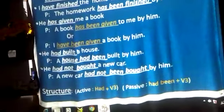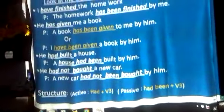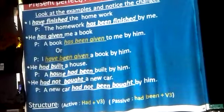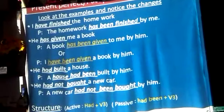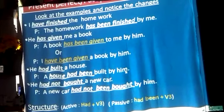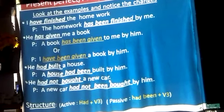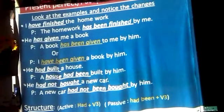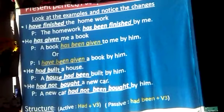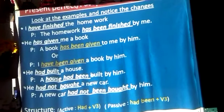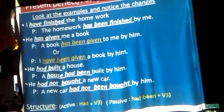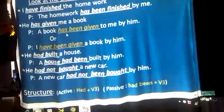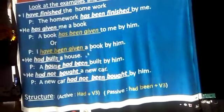'He had built a house' → 'A house had been built by him' — this shows past perfect. The first example showed present perfect. For negatives: 'He had not bought a new car' → 'A new car had not been bought by him.' In all perfect tenses — present, past, and future — the third form of the verb is used.